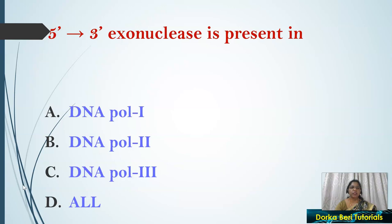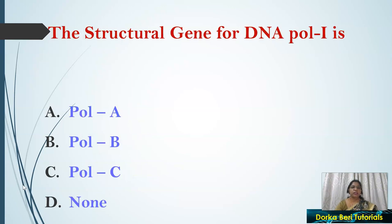Next question: 5' to 3' exonuclease activity is present in — options: DNA Pol 1, DNA Pol 2, DNA Pol 3, or all. The correct answer is DNA Pol 1. Only in DNA Pol 1 is 5' to 3' exonuclease activity present; it is not present in DNA Pol 2 and Pol 3 of prokaryotes, and it is useful in the removal of primers.